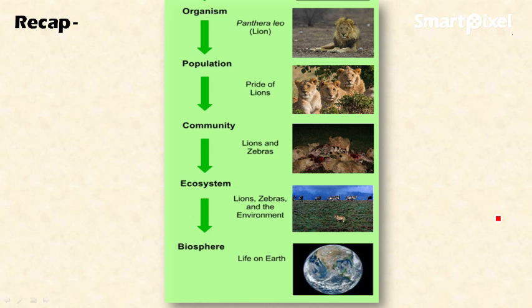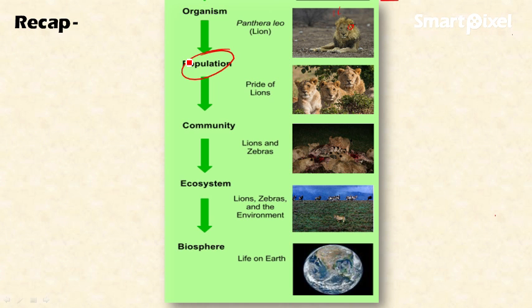Let's recap the levels of organization of ecology with this picture. This series of levels is designed to study the subject matter of ecology in a detailed and systematic way. The basic level of organization is occupied by the individual — here the lion is the example. The population is the group of individuals of a particular species, so a group of lions is called a population, which holds for all other species as well.